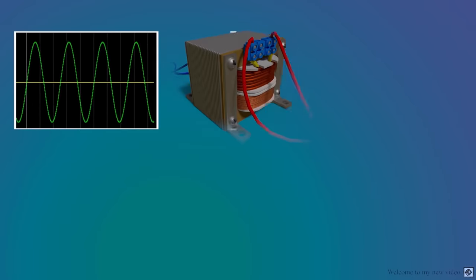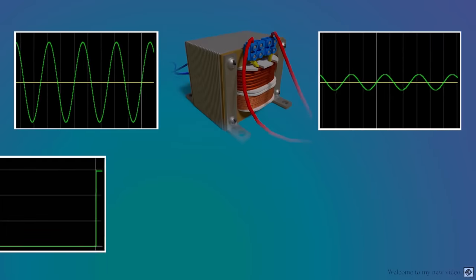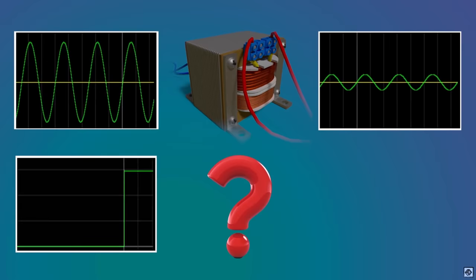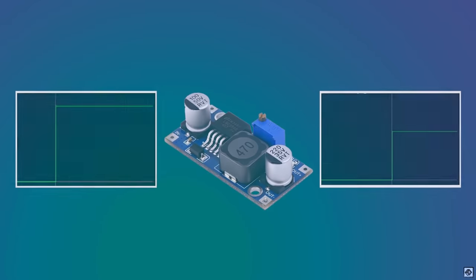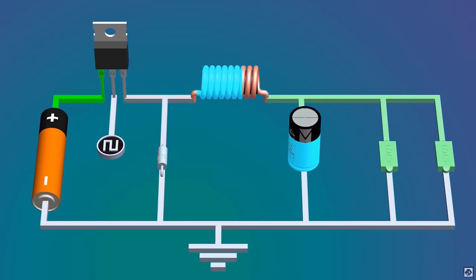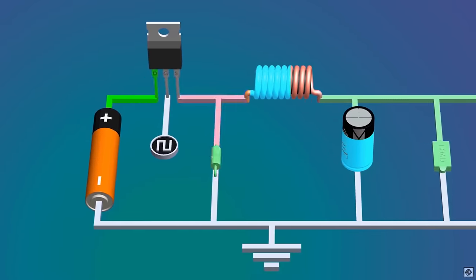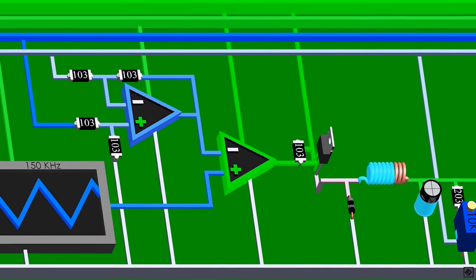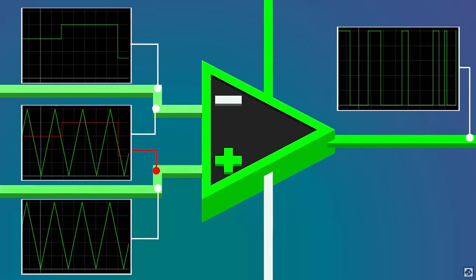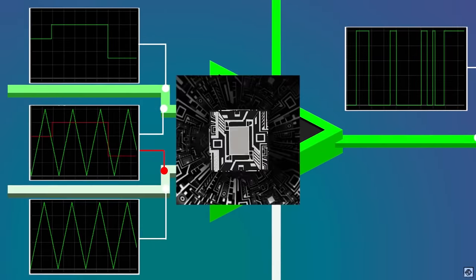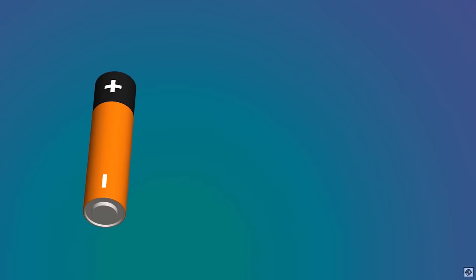To step down AC voltage we use a transformer, but how do you step down DC voltage? We use a buck converter. In this video we will be exploring the design process and working of a buck converter, which is used to lower the DC voltage efficiently.